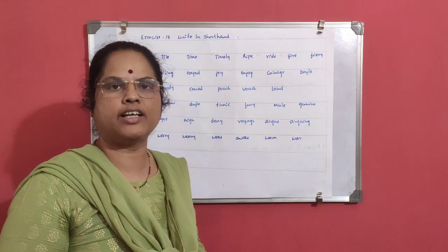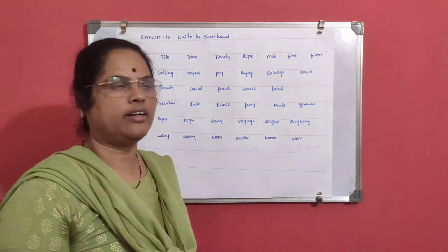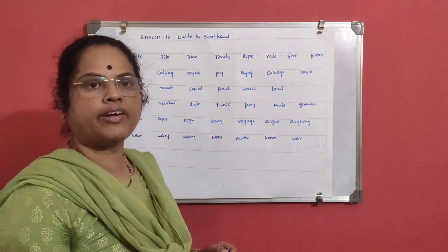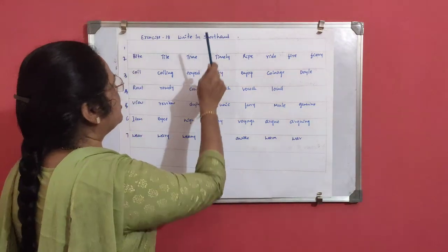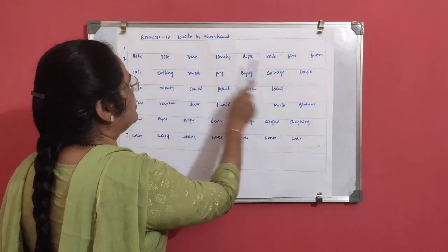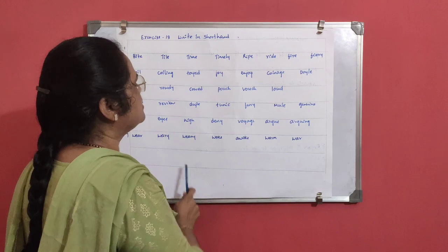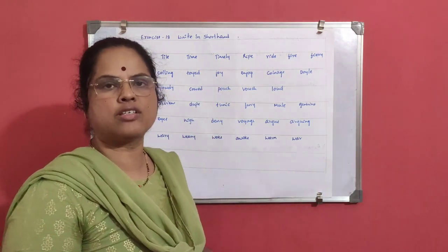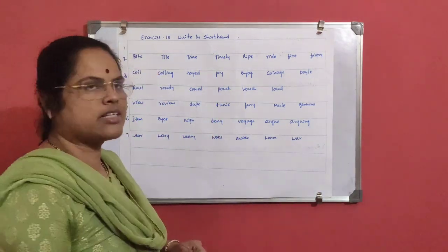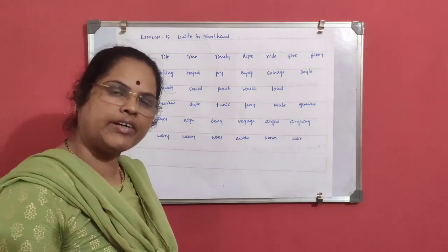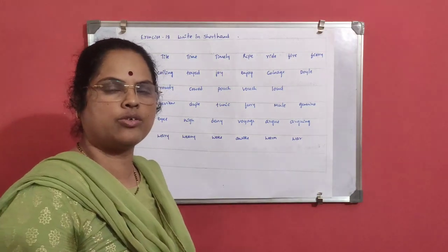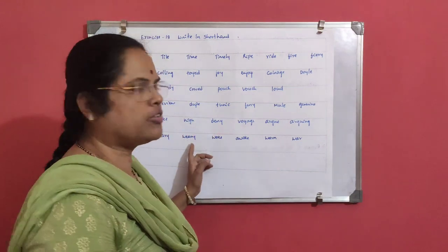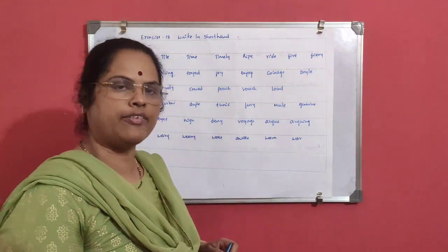This is Savitri, teaching English shorthand. Today, we will solve exercise number 18 — write in shorthand. Here are the words. This exercise is related to diphthongs and triphones. In the previous class, I solved exercise number 17, which is also related to diphthongs and triphones. This exercise is also related to diphthongs and triphones.